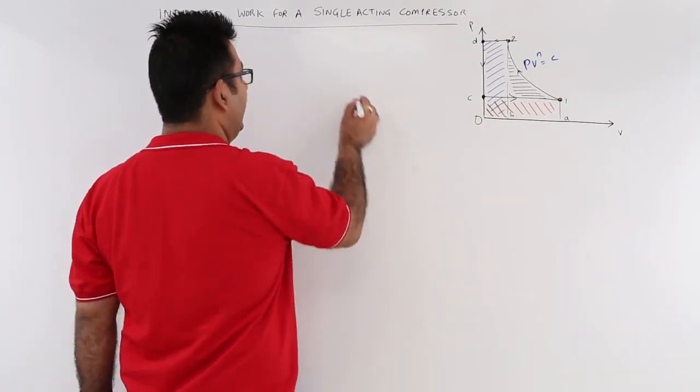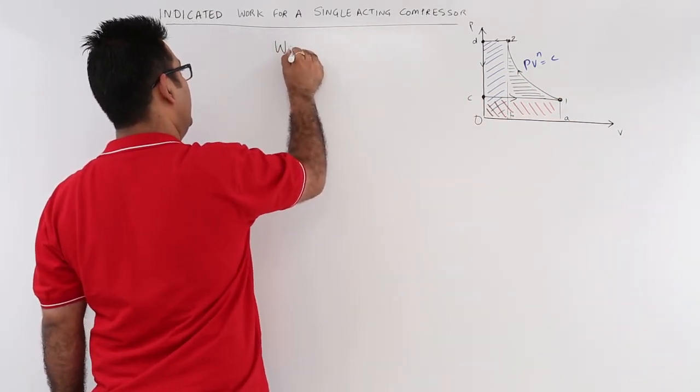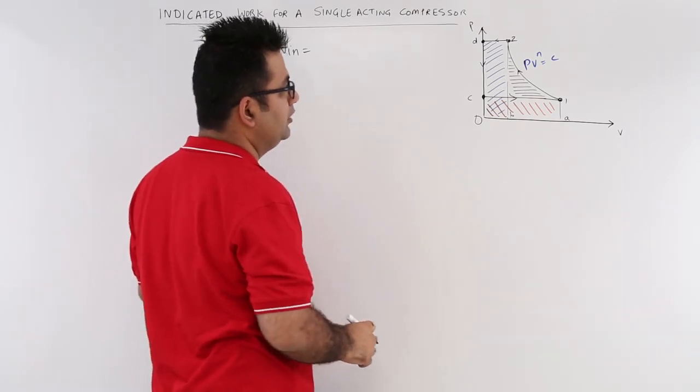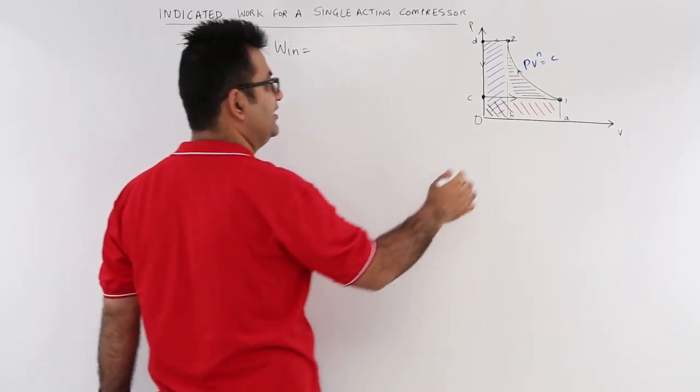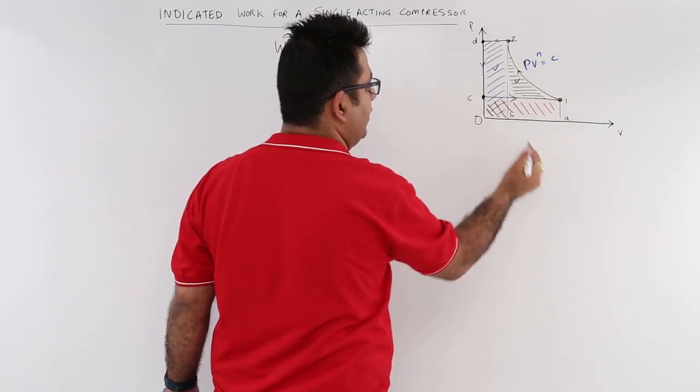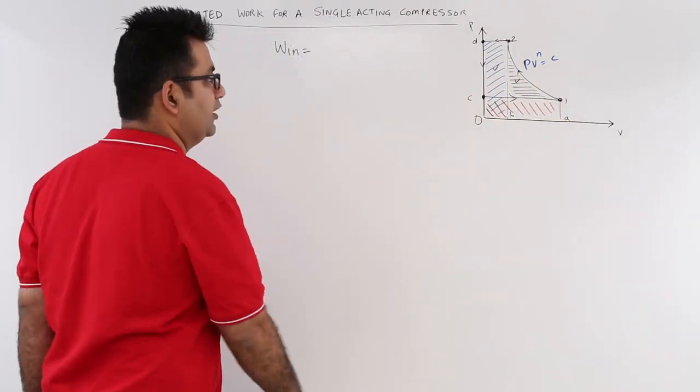So the total indicated work W_in is equal to the sum of this area, this area, and minus this area. So let us have a look at that.